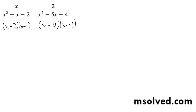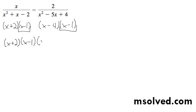It looks like they don't share any terms — oh sorry, they do. They share the x minus 1. So the common denominator is going to be x plus 2, x minus 1, x minus 4.